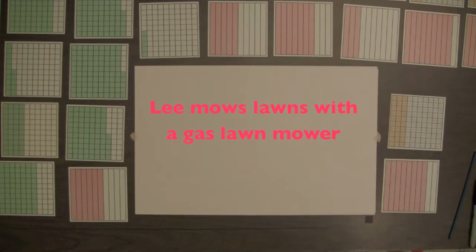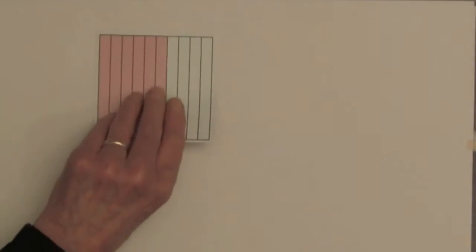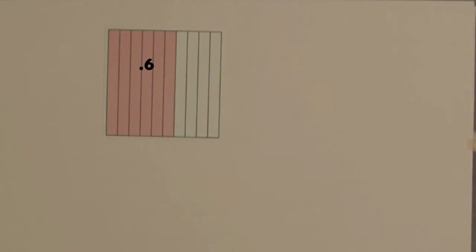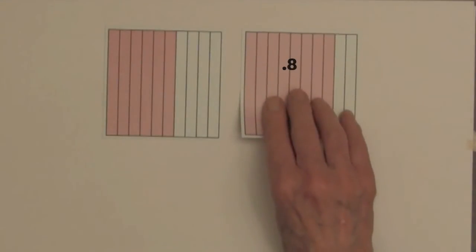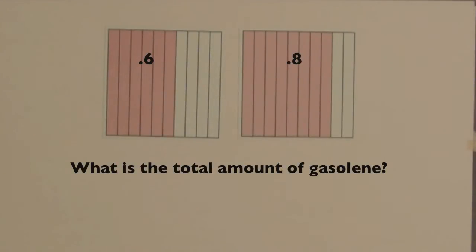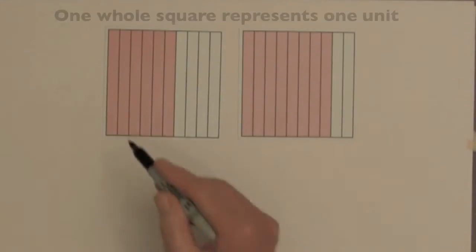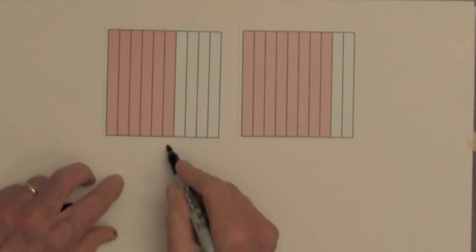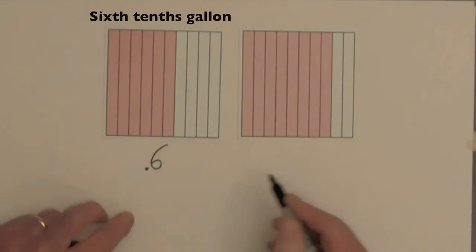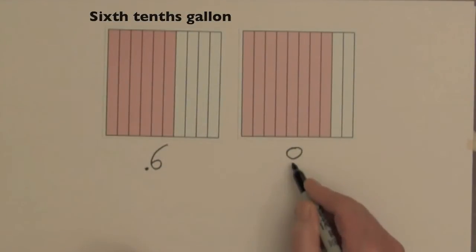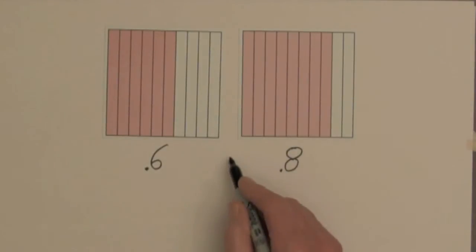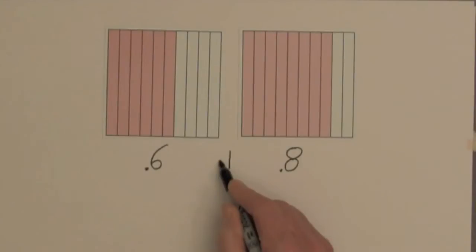Lee mows lawns and has a container with six-tenths of a gallon of gasoline and a second container with eight-tenths of a gallon of gasoline. What is the total amount of gasoline? If a whole square represents one unit, then the shaded amount represents six-tenths of a gallon, and over here we have eight-tenths of a gallon. Since we want the total amount, we combine these two amounts — that's going to be addition.